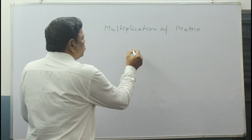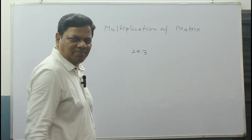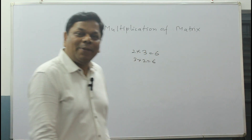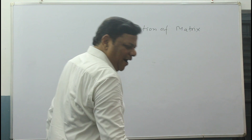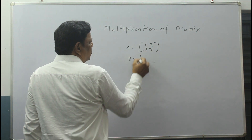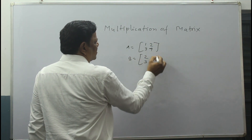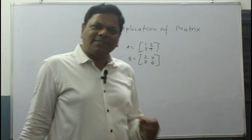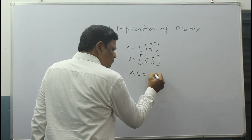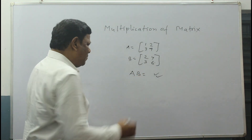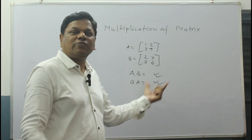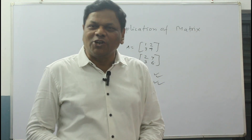For normal numbers, 2 into 3 equals 6, and 3 into 2 also equals 6 — no problem. But this does not apply to matrices. When matrix A is given as [1, 2, 3, 4] and B is given as [1, 2, 4, 3, 6], if I multiply A and B something will come, and if I multiply B and A, something different will come. AB is not equal to BA in matrix.